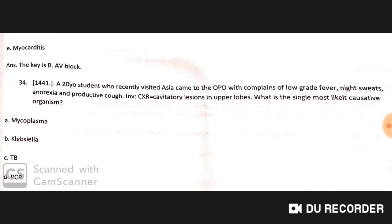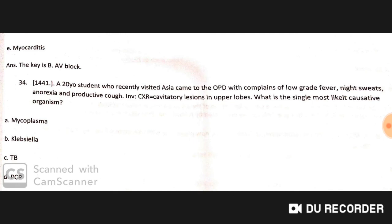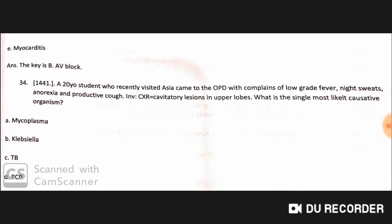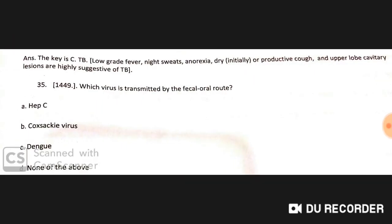In Lyme disease, the complication most likely to lead to collapse is AV block. A 20-year-old student who recently visited Asia came to the OPD with complaints of low-grade fever, night sweats, anorexia, and productive cough. Chest X-ray shows a cavitary lesion in the upper lobes. The single most likely causative organism is Mycobacterium tuberculosis.